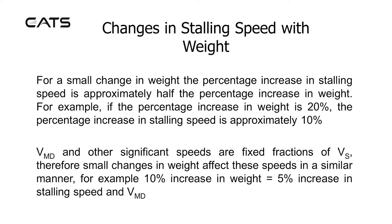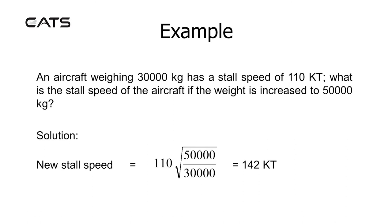Changes in stalling speed with weight. For a small change in weight, the percentage increase in stalling speed is approximately half the percentage increase in weight. For example, if the percentage increase in weight is 20%, the percentage increase in stalling speed is approximately 10%. VMD and other significant speeds are fixed fractions of VS, so a 10% increase in weight results in a 5% increase in stalling speed and VMD.